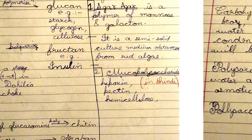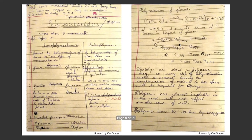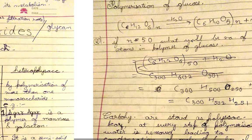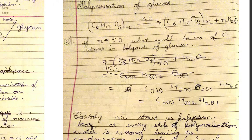Mucopolysaccharides — examples are heparin, pectin, and hemicellulose. They are found in mucus-like secretions, such as those from okra (lady's finger). Polymerization formula: glucose C6H12O6 on losing H2O gives C6H10O5 as the repeating unit. So nC6H12O6 → (C6H10O5)n + nH2O.